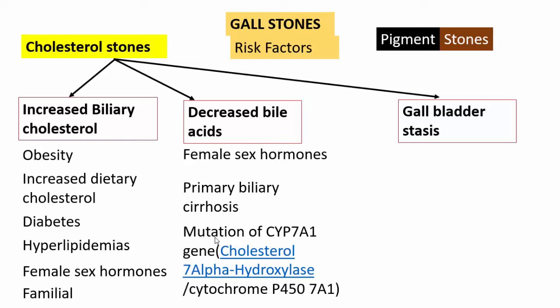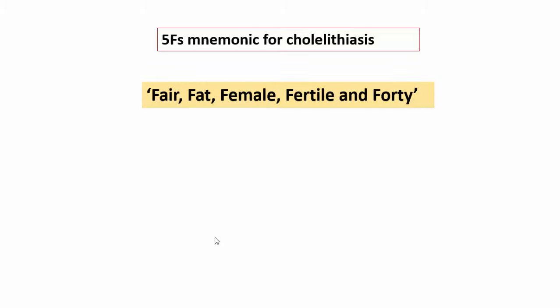Gallbladder stasis is an important factor that aids in precipitation of both cholesterol and pigments, contributing to both stone types. Stasis can occur in pregnancy or due to neurogenic or hormonal causes. A useful mnemonic for cholelithiasis etiology is the five F's: Fair, Fat, Female, Fertile, and Forty. 'Fair' refers to fair-skinned individuals as in western populations, 'Fat' refers to obesity, 'Female' reflects the hormonal reasons discussed, and 'Fertile' is another significant risk factor for gallstone development.